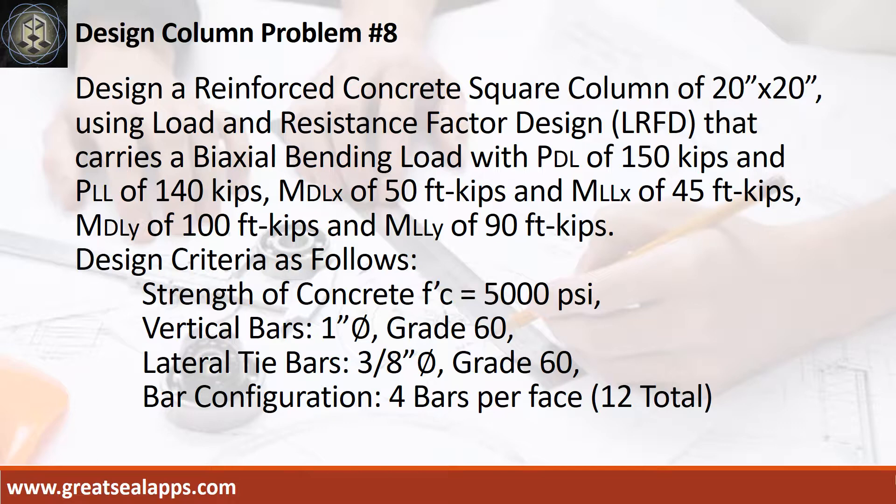Design criteria as follows: strength of concrete 5,000 PSI; vertical bars 1 inch diameter, grade 60; lateral tie bars 3/8 inch diameter, grade 60; bar configuration 4 bars per face.